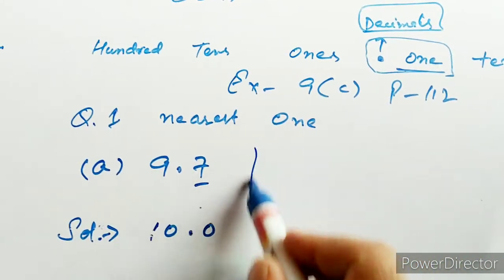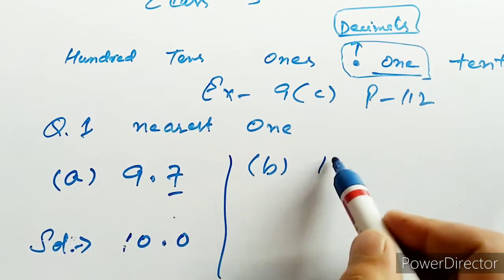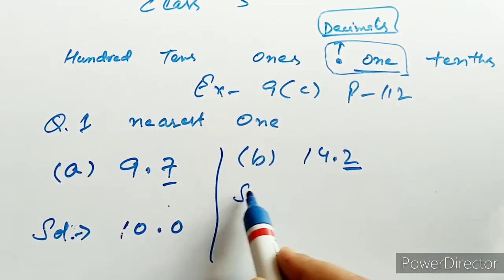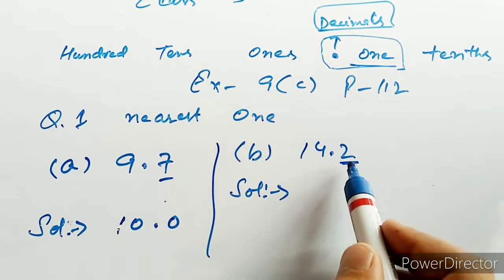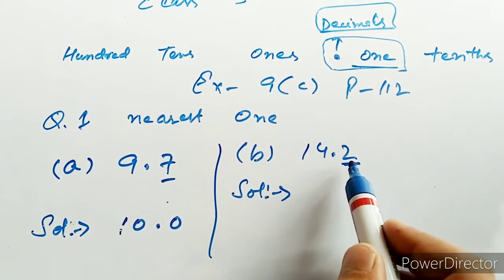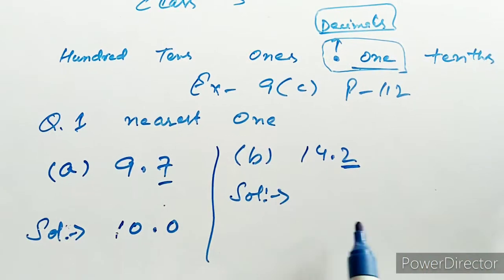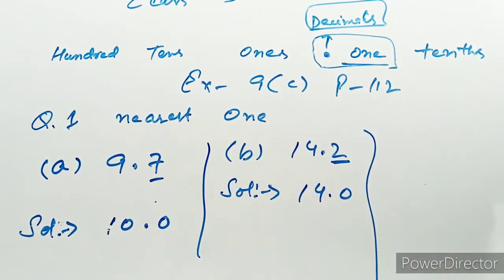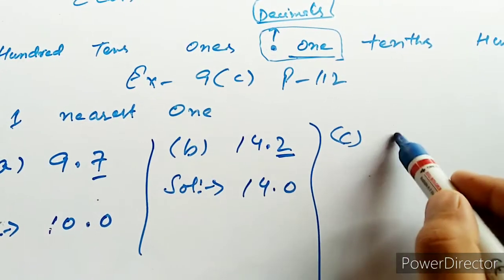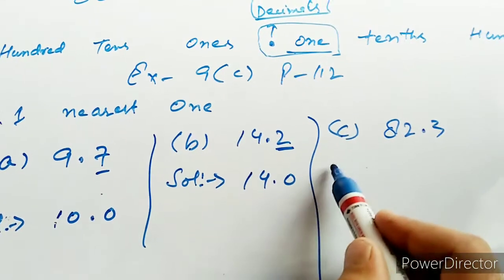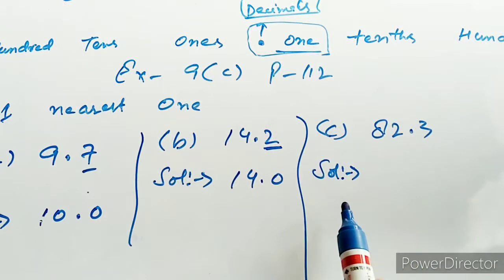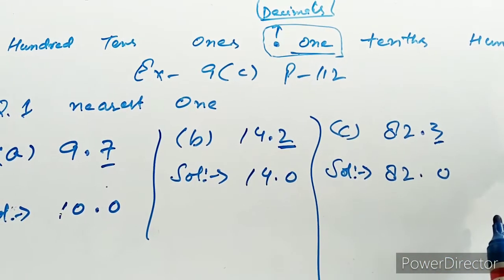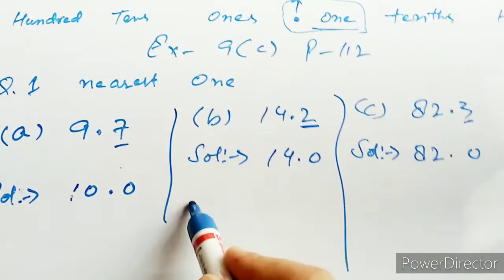चलिए अब B part करके बताता हूं। B part में लिखा है 14.2, और इसमें ones वाले को करना है, मतलब इस 2 को करना है। तो यह 2 जो है — 5 से कम है, 5 से नीचे है — तो plus 1 नहीं करना है। तो answer है 14.0। C part में 82.3 है — 3 भी 5 से कम है, तो answer है 82.0।